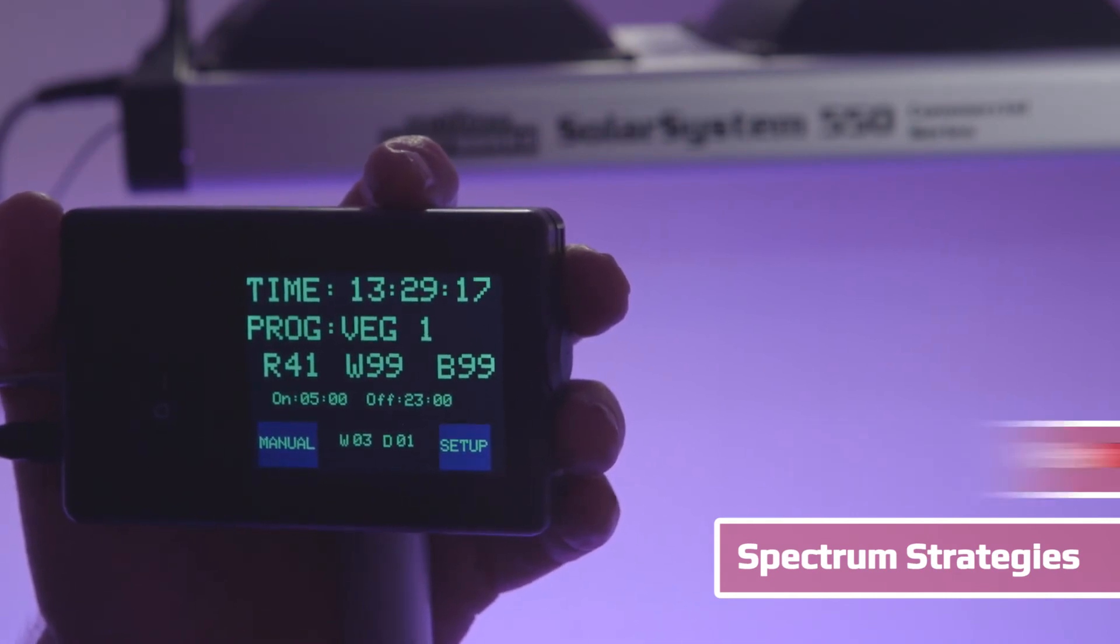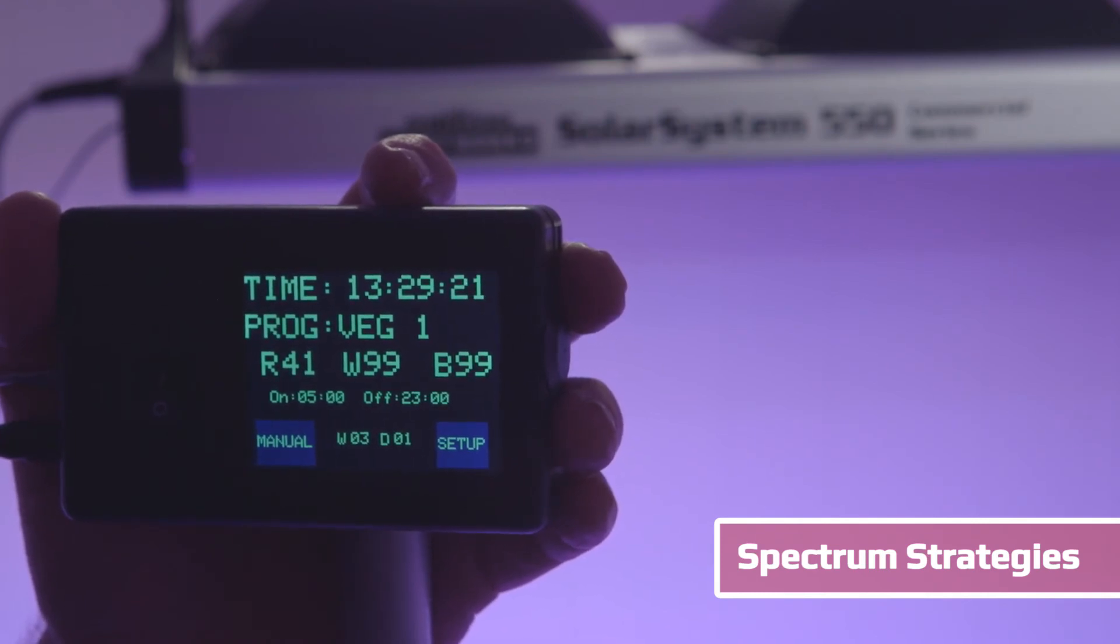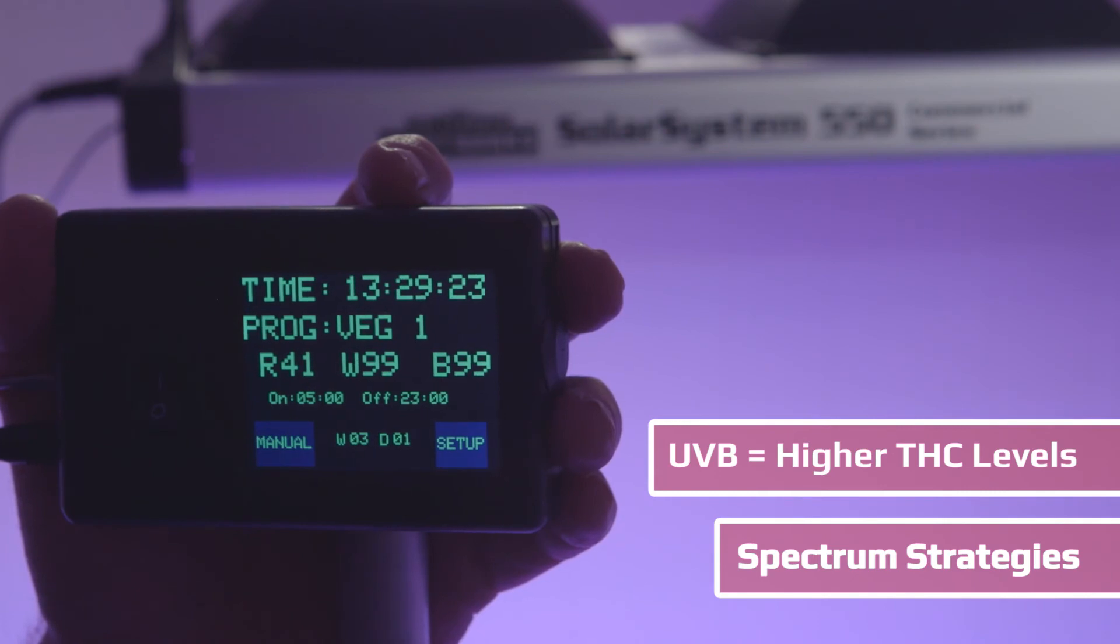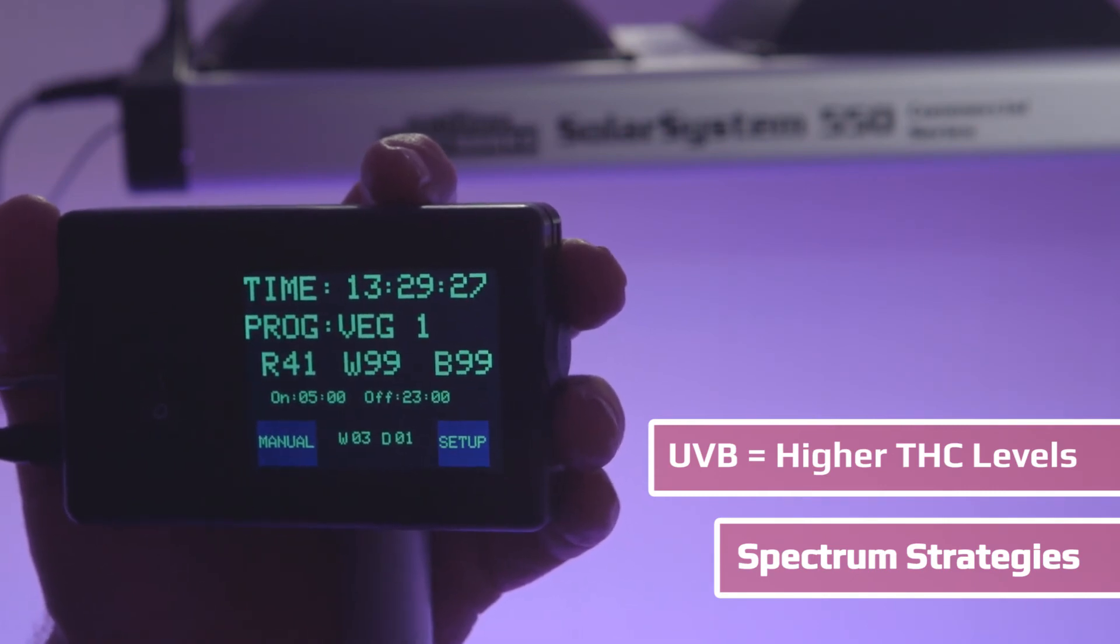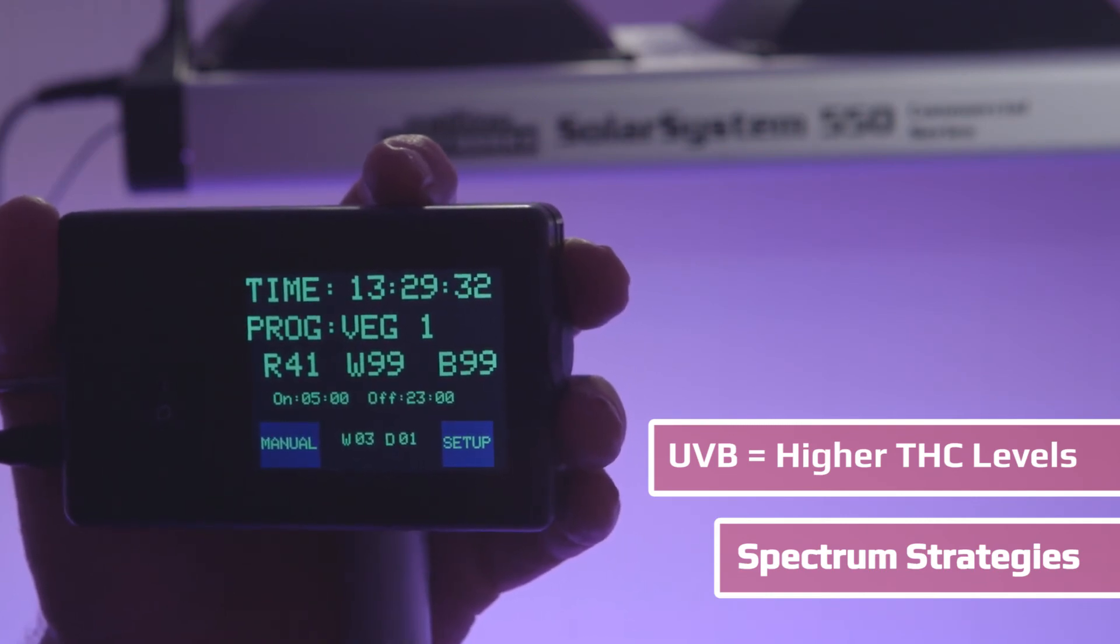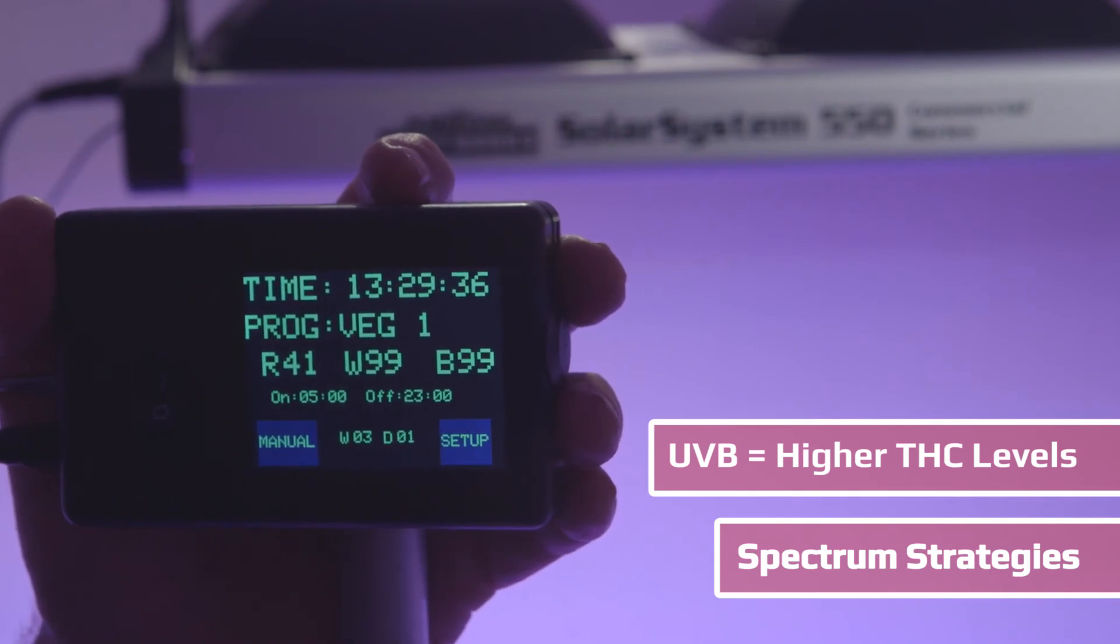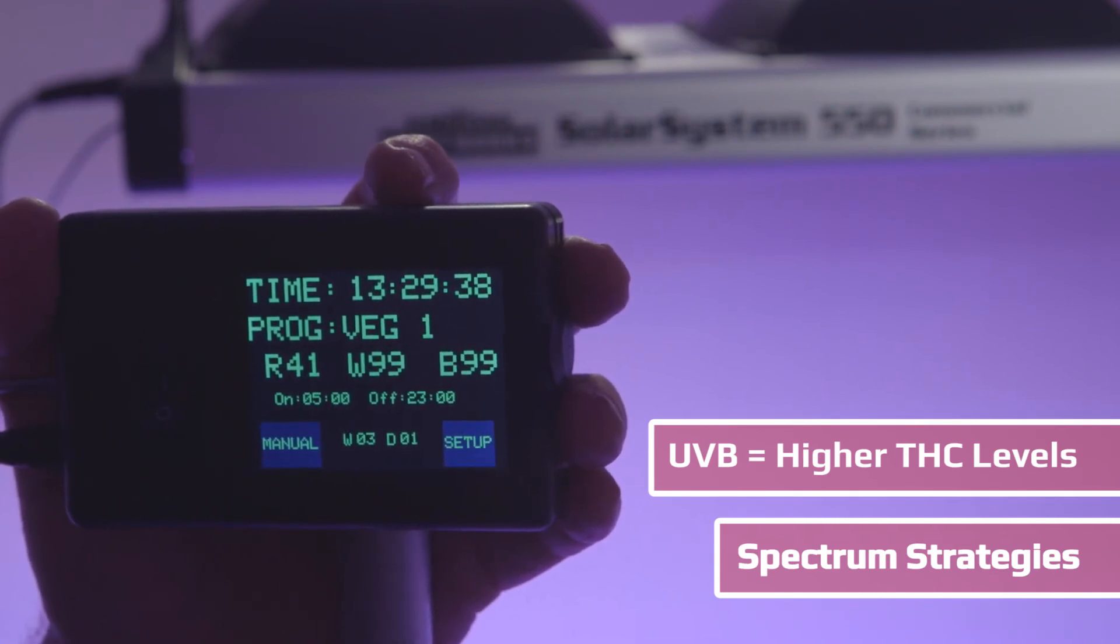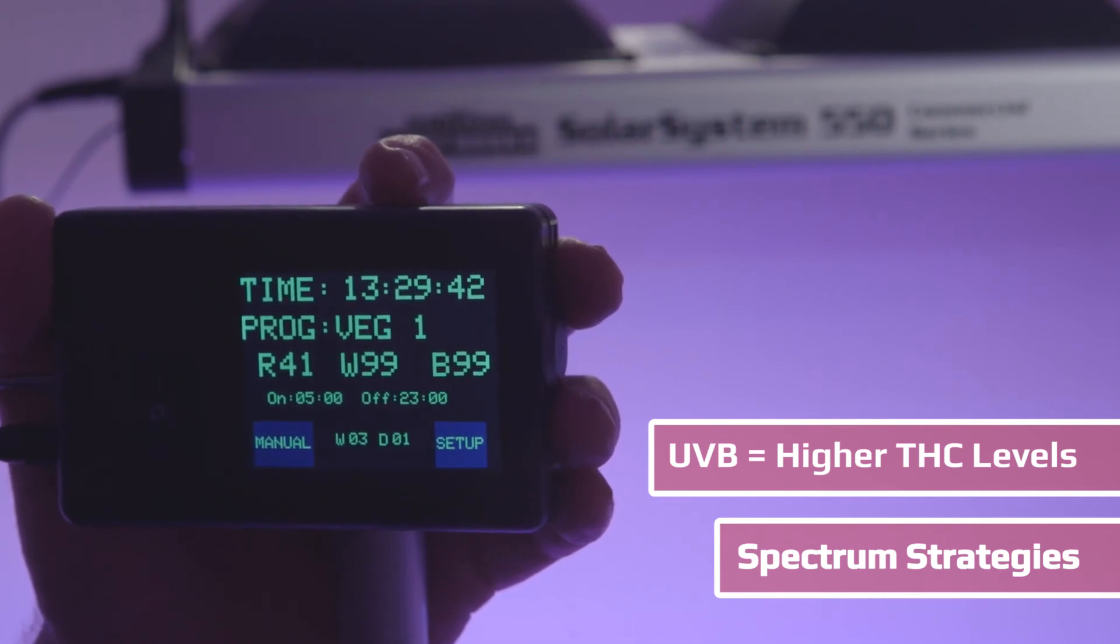One final light strategy which is fairly widely known is UVB. UVB triggers higher THC levels, especially in the last two weeks of bloom. It's a protective mechanism that only cannabis has evolved to protect its reproductive cycle.